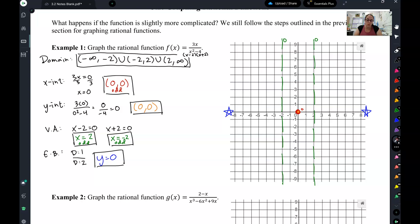X-intercepts are the numerator. So set the numerator equal to 0 and solve. Write it as a point. I know that this x-intercept is odd because the secret exponent on this 3x is a 1 and 1 is odd.